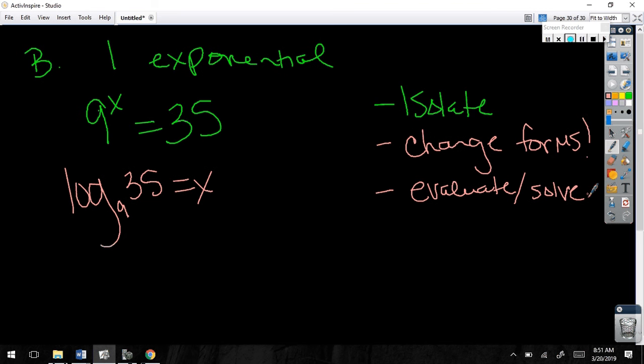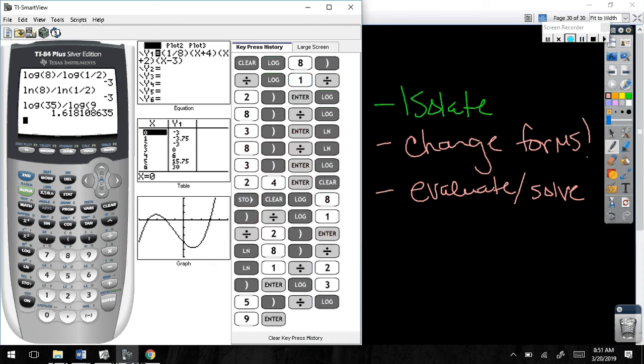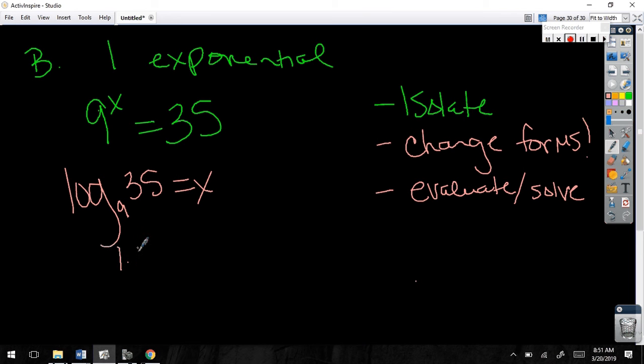I forgot to answer your homework questions. It's 5. It's 5. Log 35 divided by log 9. That changed the base. 1.618. Bless you. Approximately, because I rounded it.